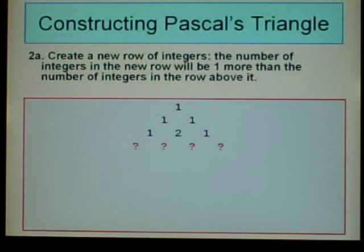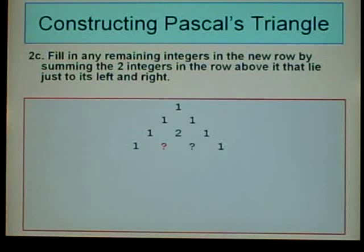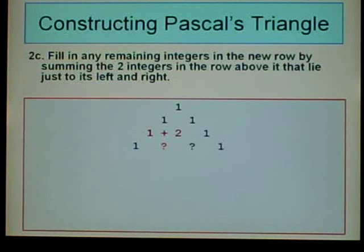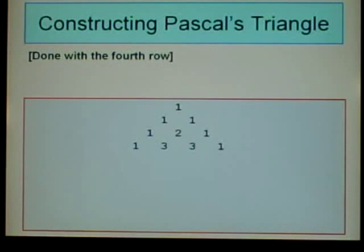We go back to step 2A to create a fourth row. We have three integers in the row above, so we have four integers in this row. The first and last are both 1. For the first question mark, we sum the two numbers above to its left and right: 1 plus 1 equals — well, 3. Wait, that slot: 1 plus 2 equals 3. For the next unknown: 2 plus 1 equals 3. Now we're done with the fourth row.